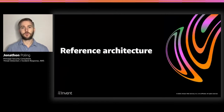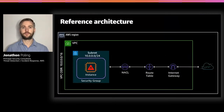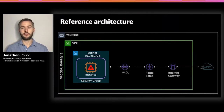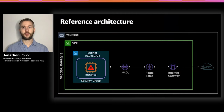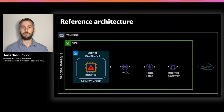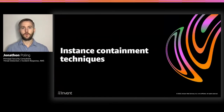First, we'll set the stage with a reference architecture to better visualize our areas of focus for containment. We have one instance in a security group, with a network access control list or NACL applied to the subnet, a route table routing traffic to and from the instance, and an internet gateway providing internet connectivity. Your environment may have additional things around each of these items, but these will be the important points of focus for implementing effective containment measures.